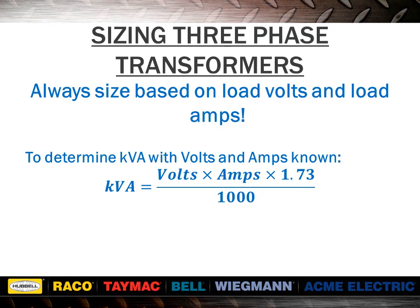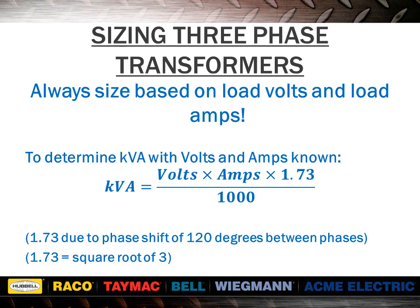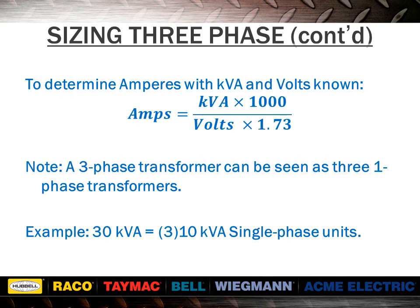The three-phase formula for determining kVA requirements differs from the single-phase formula by a multiple of 1.73. To determine kVA for a three-phase transformer with volts and amps known, multiply volts by amps by 1.73 and divide by 1,000. The factor 1.73 is used due to the phase shift of 120 degrees between phases; 1.73 equals the square root of 3. To determine amps with kVA and volts known, multiply kVA by 1,000 and divide by volts multiplied by 1.73. Note that a three-phase transformer can be seen as three single-phase transformers — for example, a 30 kVA equals three 10 kVA single-phase units.